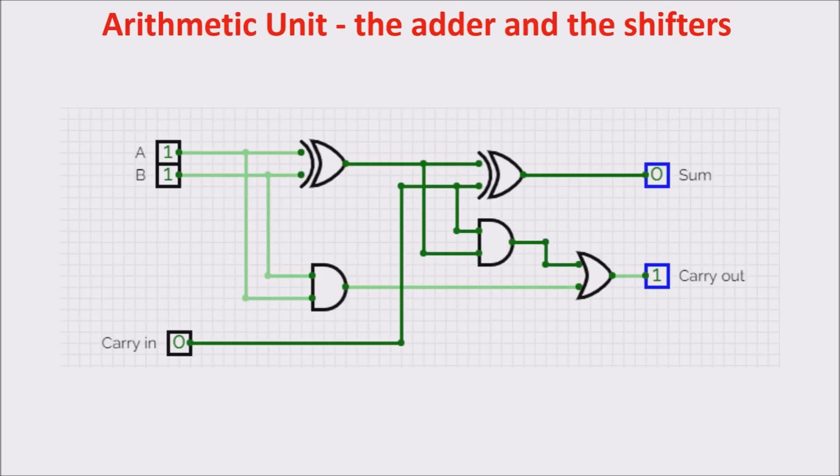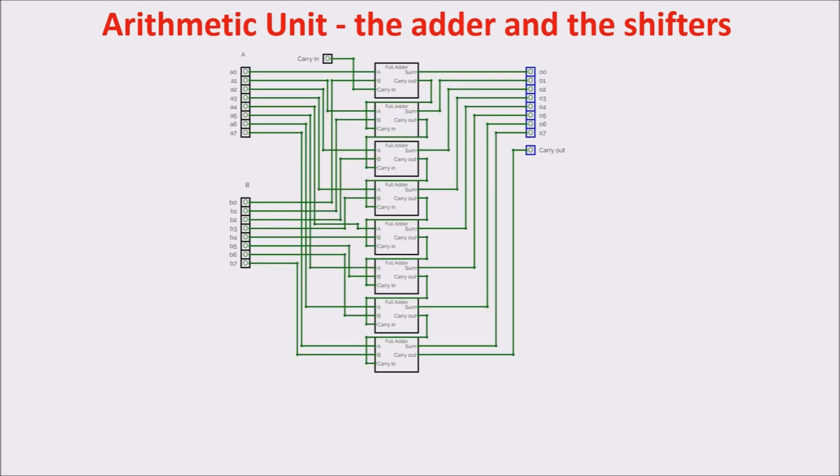One of the most important ALU components is the adder we analyzed in previous videos. Here you can see a full adder which adds two bits and gives a bit as a result plus a carry-out. With eight full adders as this one, we built an 8-bit adder like this. You can see in this simulation zero plus zero equals zero, and in this other simulation three plus four equals seven. You can see the carry-in and the carry-out. Remember the adder is important not only for the addition but for all four operations, as we saw in previous videos.